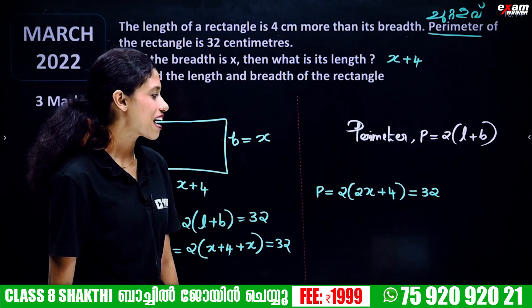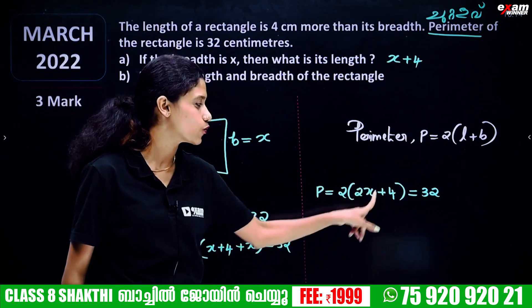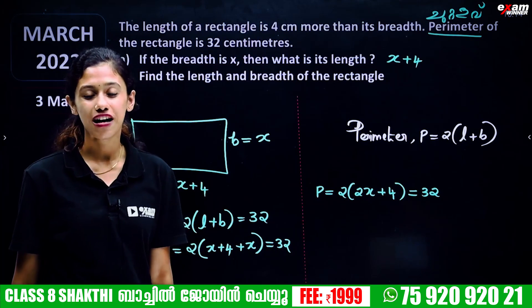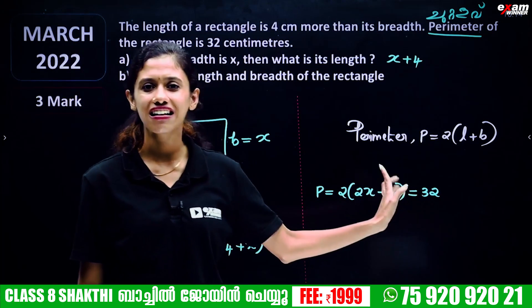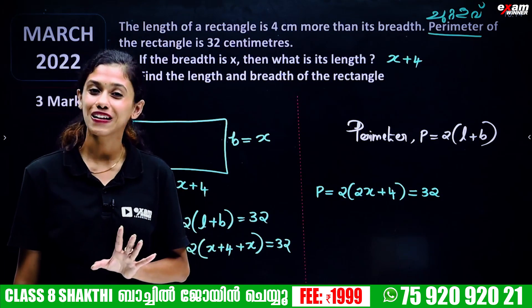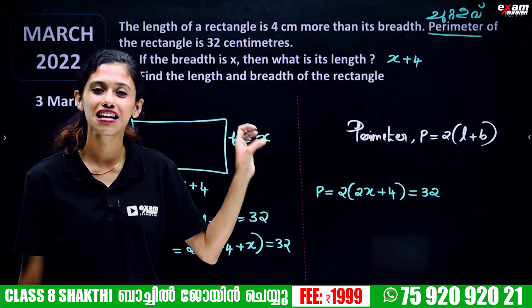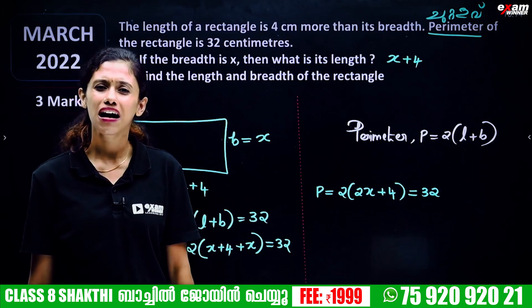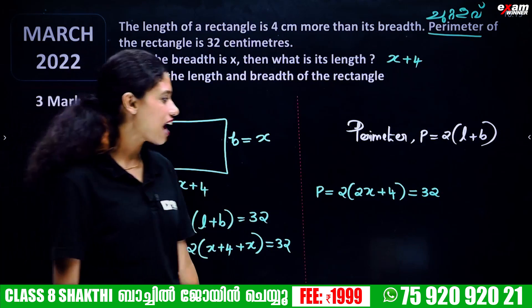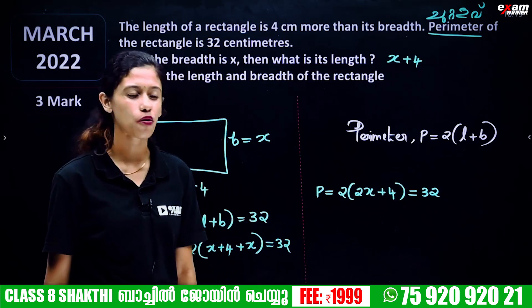The perimeter is 32, so 2 into 2x plus 4 equals 32. We divide both sides by 2. So 2x plus 4 equals 16. We solve for x.